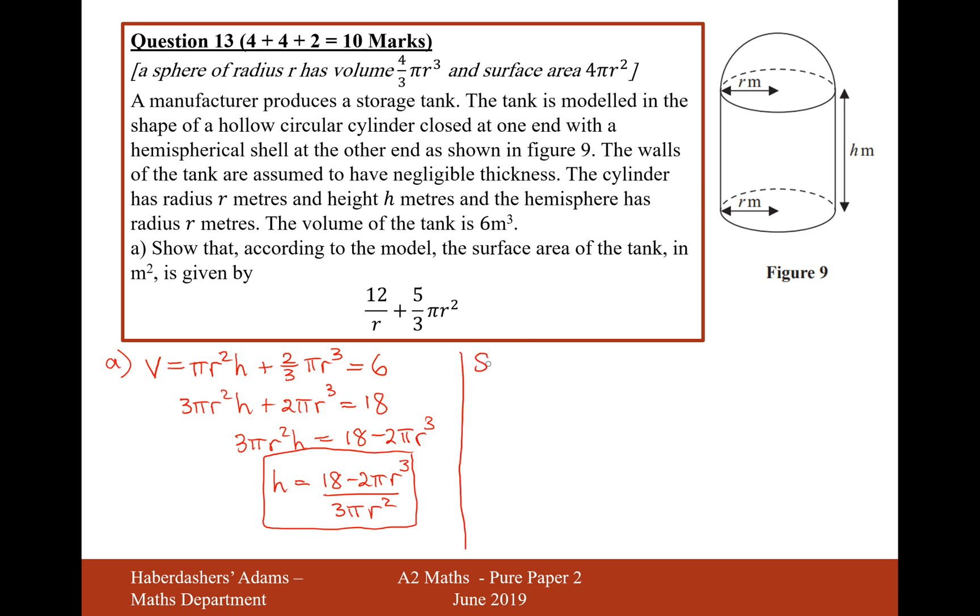Now, we need to have a look at the surface area of the tank. The surface area of the tank is going to be, there's a base on it, so that's pi r squared plus the hemisphere. The total sphere will be pi r, 2 pi r squared because it's 4 pi r squared for a whole surface area of a sphere. This is just a hemisphere, so that's just half of it.